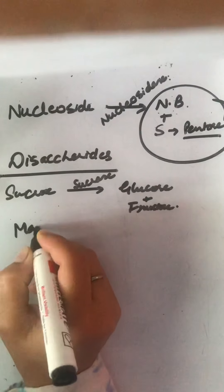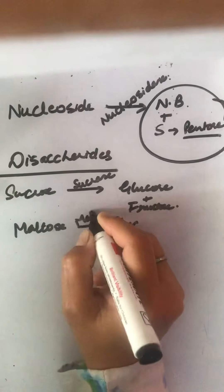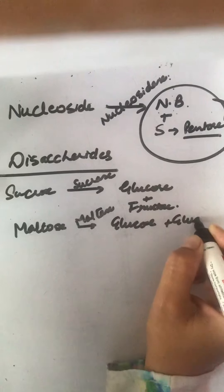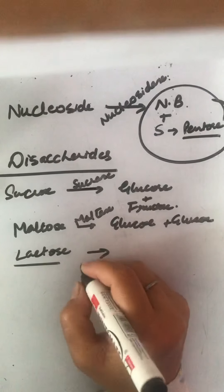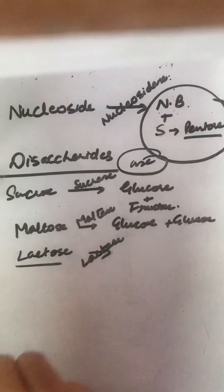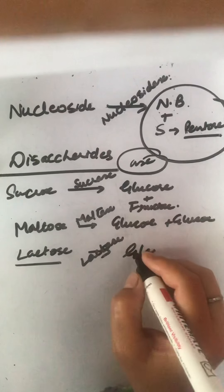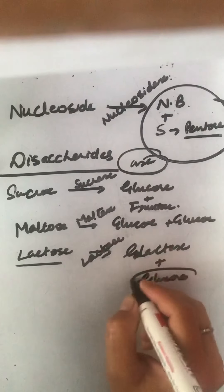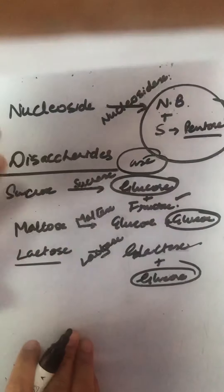Maltose is acted upon by maltase enzyme and converted into glucose and glucose units. Then lactose is acted upon by lactase — remember, '-ase' suffix is for the enzyme everywhere. Lactose is converted into galactose as well as glucose. So glucose is present in all these end products.